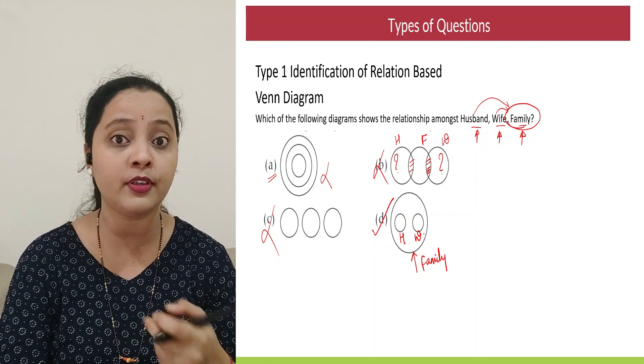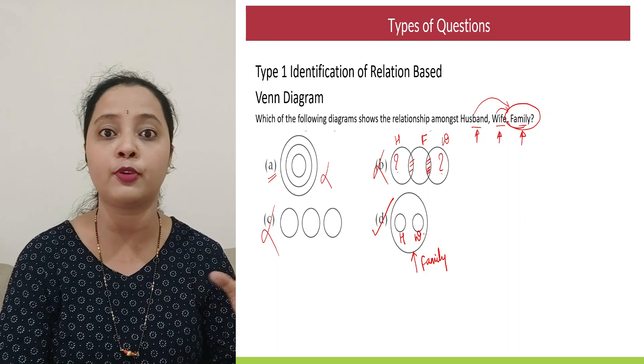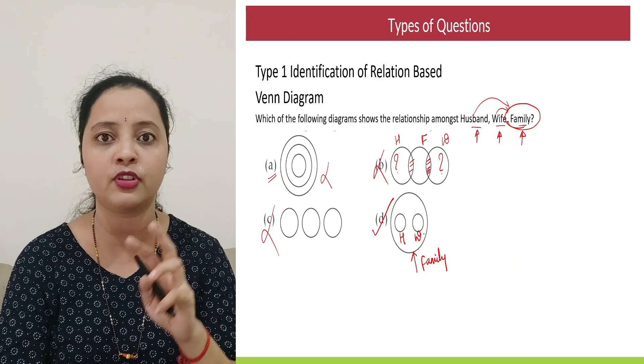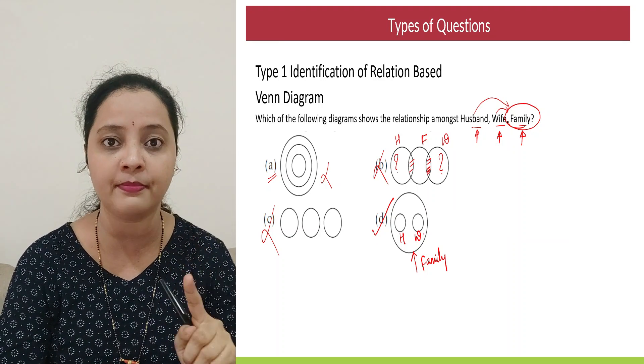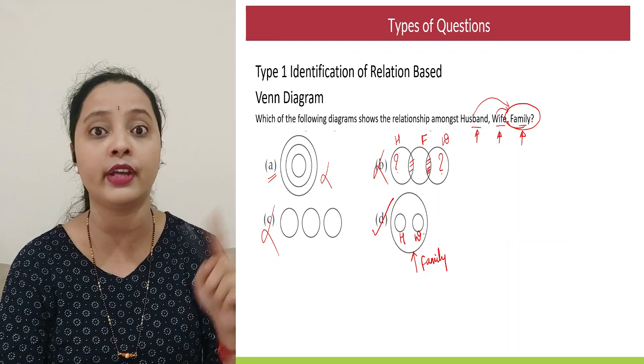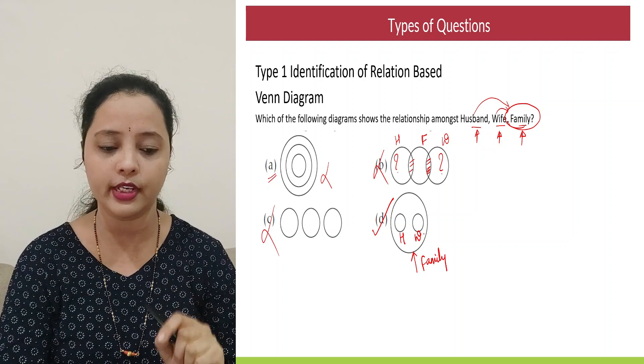So another important point that I forgot to tell you in the start is obviously we look for the most appropriate option. Though the approach that we use is we find the major element among the components given and we go with option elimination. Remember do not draw your own Venn diagram. But try to get it from the options that are available.